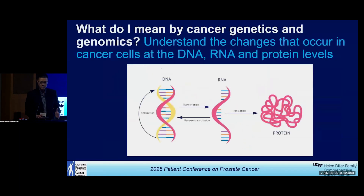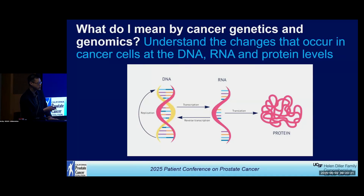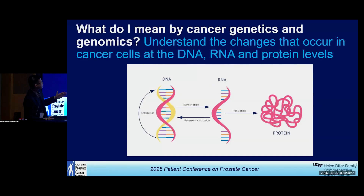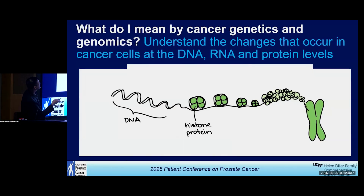What do I mean when I talk about cancer genetics and genomics? It's really the understanding of the changes that occur within the DNA, RNA, and protein levels that drive proliferation and changes in cell death. We also know now that DNA is wrapped up in proteins called histones that can change how the message is read — if DNA is tightly wound in histones, those messages can't be seen by the cell.